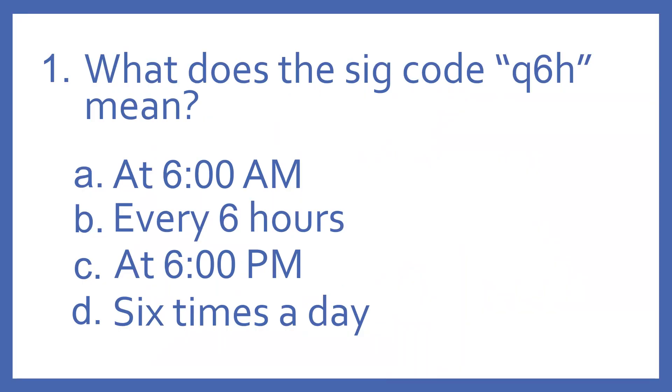Number one, what does the SIG code Q6H mean? A, at six o'clock AM, B, every six hours, C, at six o'clock PM, or D, six times a day? And the answer is B, every six hours. Q6H means every six hours.